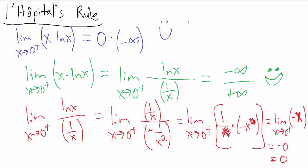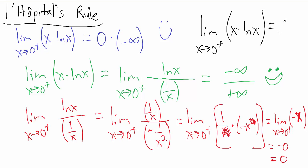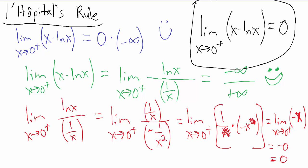What we found is that the limit as x goes to 0 from the positive side of x times the natural log of x equals 0. That's another example of using L'Hôpital's rule. More examples are coming up in the next few videos.